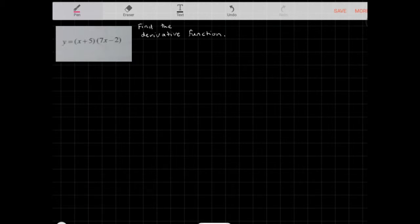Okay, find the derivative function. So if we look at this function, y is equal to (x + 5) times (7x - 2). In this case, we have to actually use product rule.